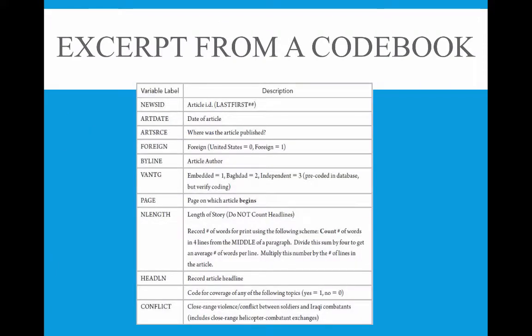An excerpt from a code book shows how they constructed it using brief codes to represent overall issues and themes they're looking for in the content analysis. This way, you can nearly standardize the information to measure it more effectively and represent it as graphs, charts, and tables.